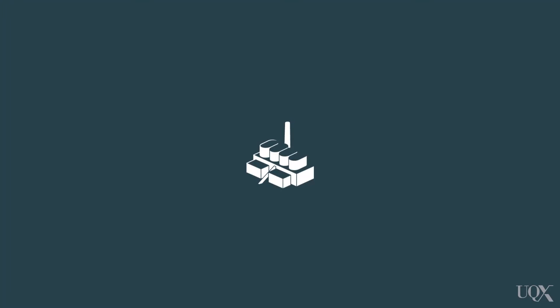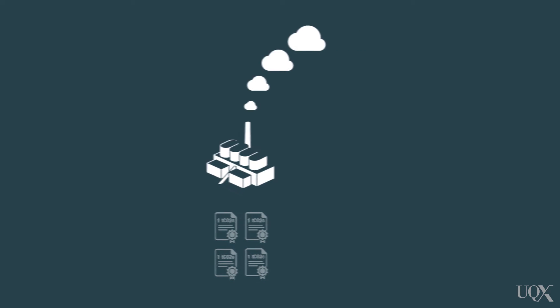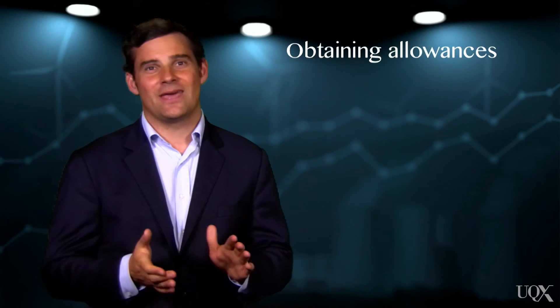The rules of the game are quite straightforward. At the end of the compliance period, liable companies need to surrender or give up one allowance for every tonne of greenhouse gases emitted over that period. For example, a company that emits 50,000 tonnes of CO2 equivalent will need to surrender 50,000 allowances to the government.